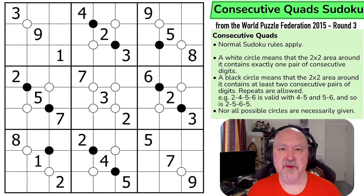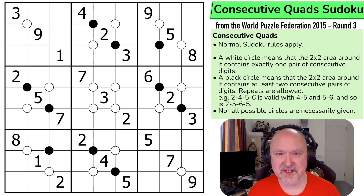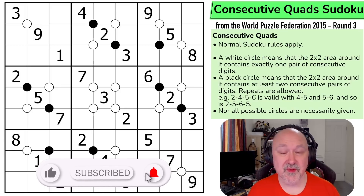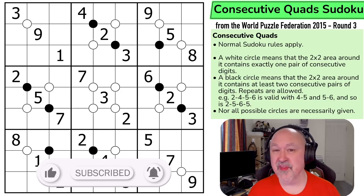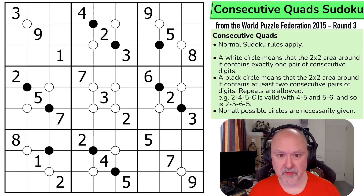Hi, and welcome to Bremster Puzzles, where I'm continuing my solving through the 2015 Set 3 of the World Puzzle Federation Sudoku Competition Set. We are now getting into the last few puzzles, and this one is a consecutive quads Sudoku, which in the original puzzle set was worth 40 points, and this puzzle was created by Shish Kumar. This is a puzzle using a constraint I've never seen before, so I'm kind of looking forward to exploring this one.